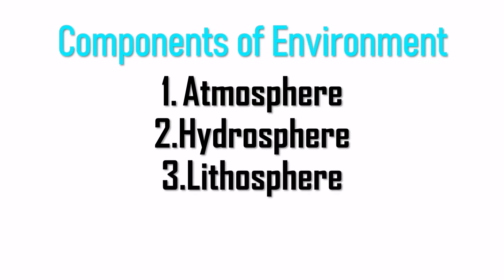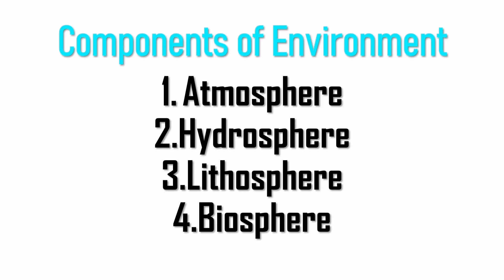Next is lithosphere — it is the solid outer part of the Earth, made of rocks and stones. That is called lithosphere. Next is biosphere. Biologically, our surroundings — including the atmosphere and the deep oceans — form the biosphere. These are the components of the environment.